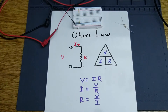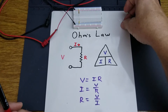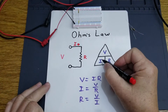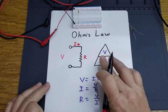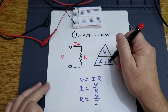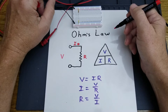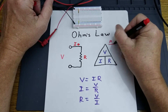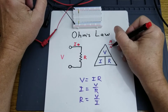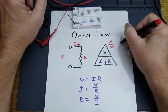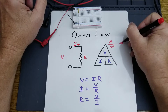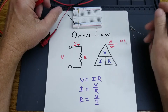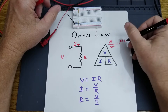Let's calculate what that current should be. We want to find out what the current going through that resistor is. To calculate current, you cover up the I in the triangle and you will have voltage divided by resistance. If we know that we have 10 volts and our resistance is 1,000 ohms, then we should have 0.01 amps, which is also 10 milliamps.